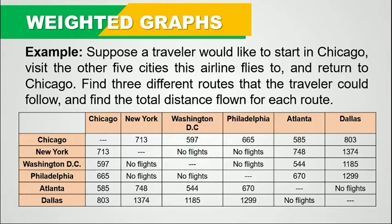Suppose a traveler would like to start in Chicago, visit the other five cities this airline flies to, and return to Chicago. We need to find three different roads that the traveler could follow and find the total distance flown for each road. Based on the problem, we will start in Chicago, pass through the other five cities, and then return to Chicago.